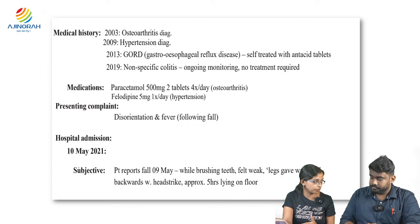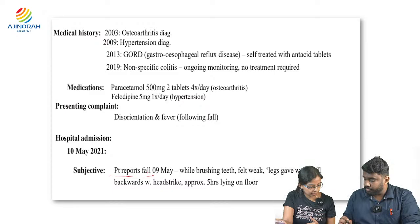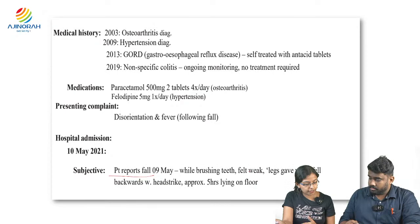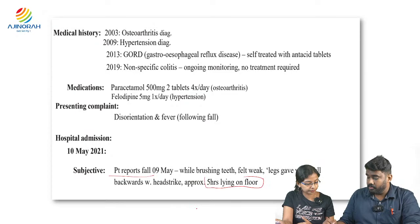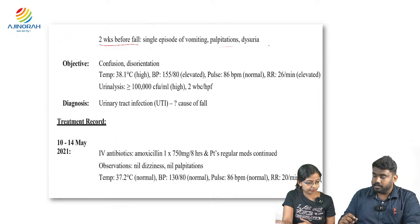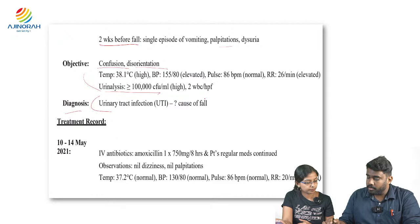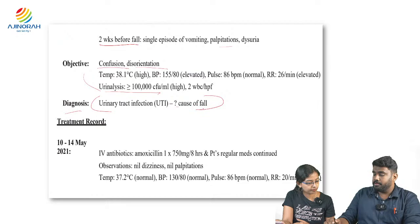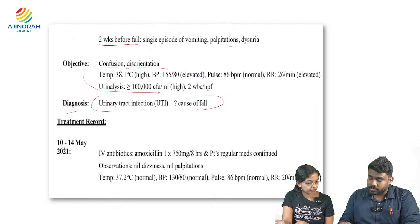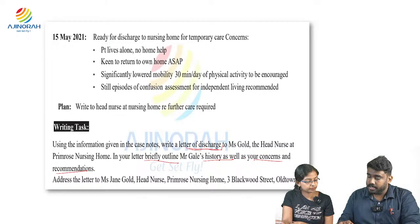His presenting complaint: disorientation and fever. Hospital admission on 10 May 2021 — history of a fall on 9 May while brushing teeth, legs gave way, fell backward with a head strike, lay on the floor for approximately five hours. Two weeks before the fall, a single episode of vomiting, palpitations, and dizziness. Objectively: confusion and disorientation, vital signs, urine analysis. Diagnosis: urinary tract infection, possibly the cause of the fall. Treatment from 10 to 14 May: commenced on IV antibiotics.